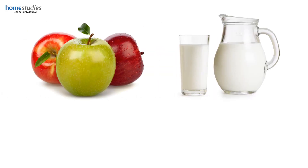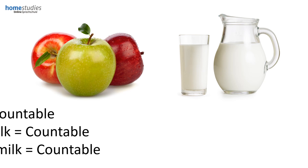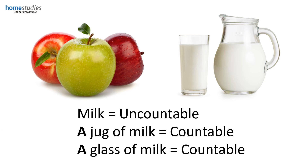However in this picture we have some milk. Now this is uncountable because milk is a liquid. However we could say a glass of milk or a jug of milk. A glass of milk and a jug of milk would be countable because they are containers and we can count the containers. Therefore milk is uncountable because it's a liquid, but a jug of milk and a glass of milk are countable because they are containers.